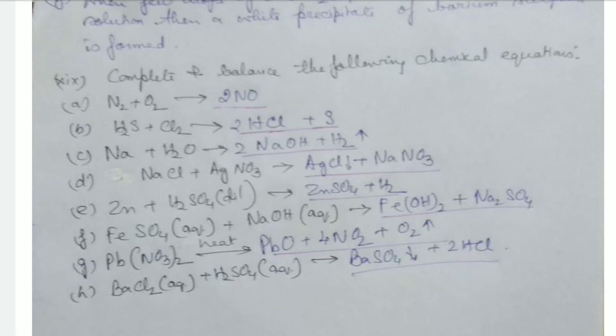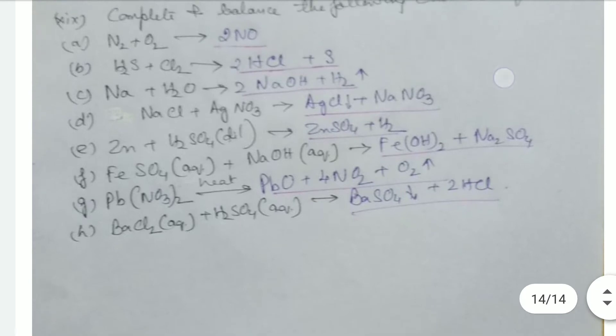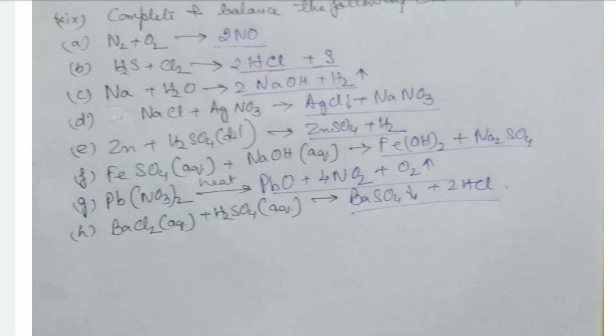Then Na, that is sodium, plus H2O will give us 2NaOH plus H2. Then NaCl plus AgNO3 will give us AgCl plus NaNO3. Then Zn plus H2SO4 dilute will give us ZnSO4 plus H2. Then FeSO4 aqueous solution will react with NaOH aqueous solution to form Fe(OH)2 plus Na2SO4.